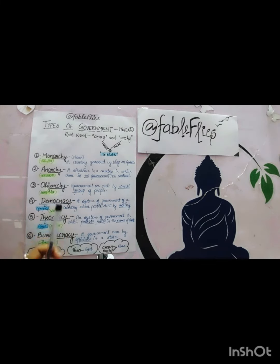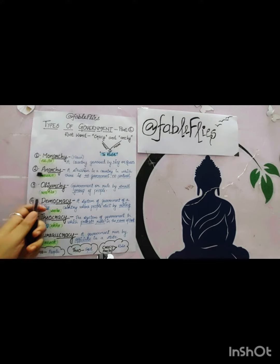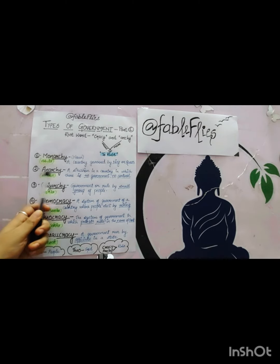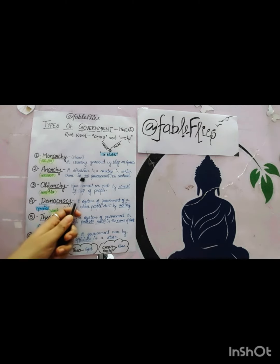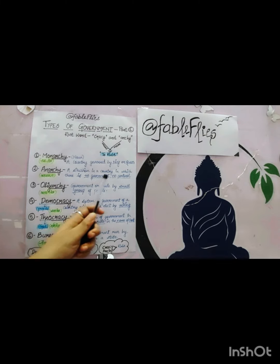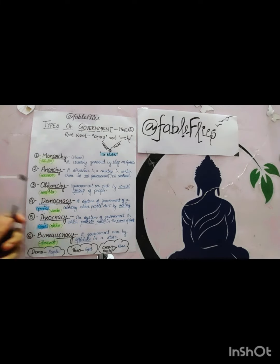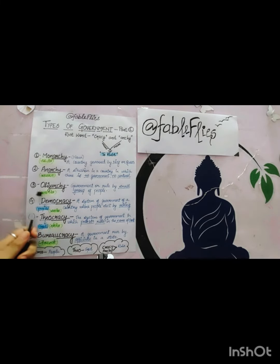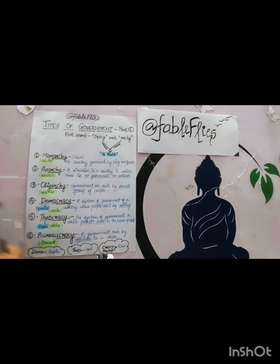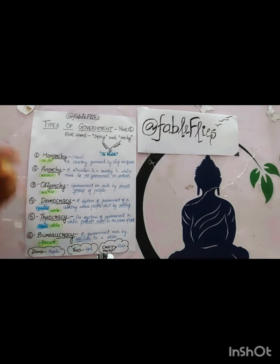Next we come to anarchy. 'Archy' means rule, and anarchy means where there is no government or no control. Next is oligarchy. Oligarchy means a government or rule by a small group of people, where there is a small group of people ruling the country.